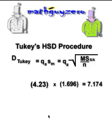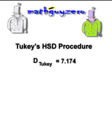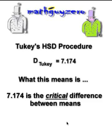So 7.174 is your marker. If any of the mean differences between any groups is greater than 7.174, that means they're going to be significantly different. If the mean difference between the groups is larger than 7.174, then we say we have a significant difference. That's what the Tukey test does.